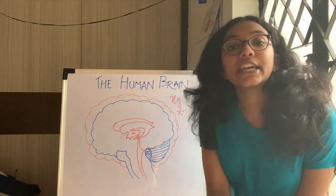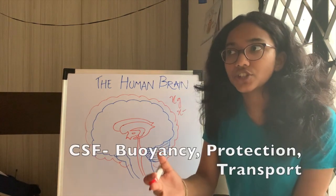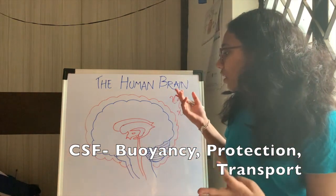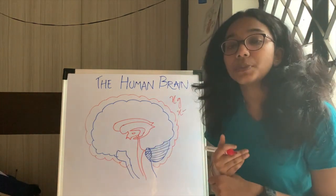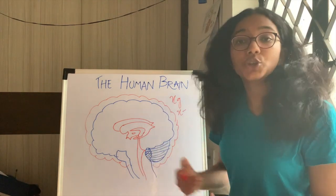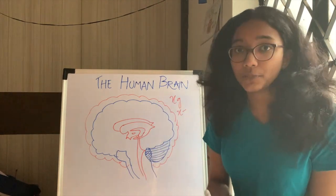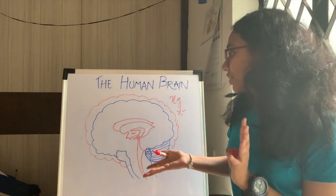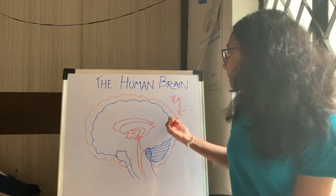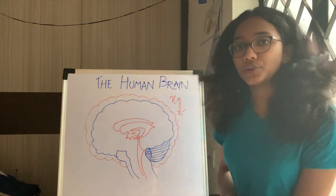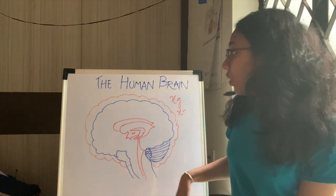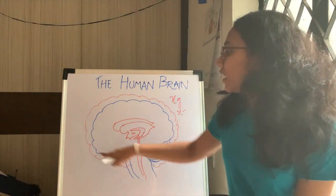The last and final function is transportation of electrolytes. As you know, for an electrical signal to be transported in our nervous system you need electrolytes such as sodium and potassium. So exchange of electrolytes and all those functions are also carried out by cerebrospinal fluid. It's present mostly in the ventricles, in the spinal cord, and around the brain.